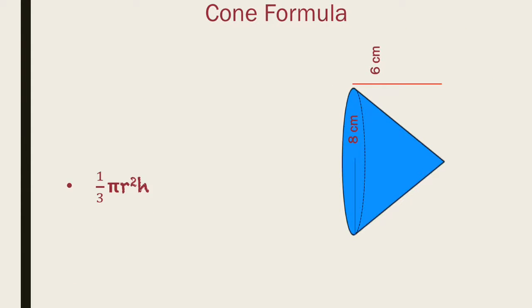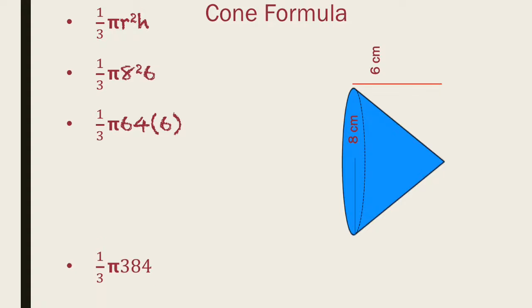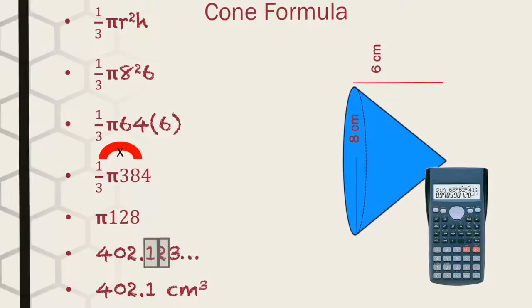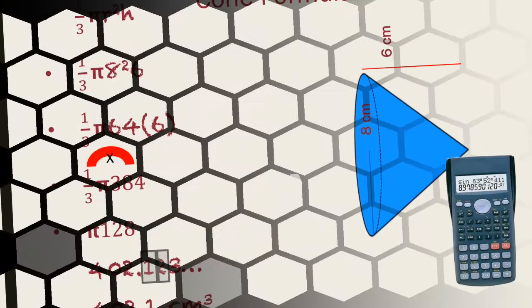So we have another cylinder. In this case, we start with the formula again, which is one third pi r squared h. Eight is the radius and six is the height, so there's where we substitute them. Eight squared is 64. 64 times six is 384. Now again, we're going to multiply around the pi first to get our answers in terms of pi and one third of 384 is 128. And then if we take our calculator and do 128 times pi, we get this number right here. We're going to use the two to tell us what to do with the one. The two is going to tell the one to stay. And so this is going to be our answer and it's going to be in terms of cubic centimeters. Very important.